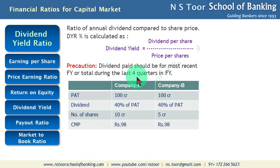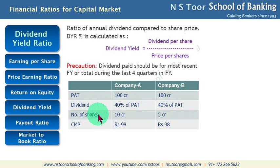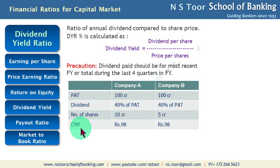Let us see these examples. We have two companies — Company A and Company B. Profit after tax for both companies is 100 crore. The dividend rate paid by both companies is 40% of profit after tax. Number of shares in Company A is 10 crore.